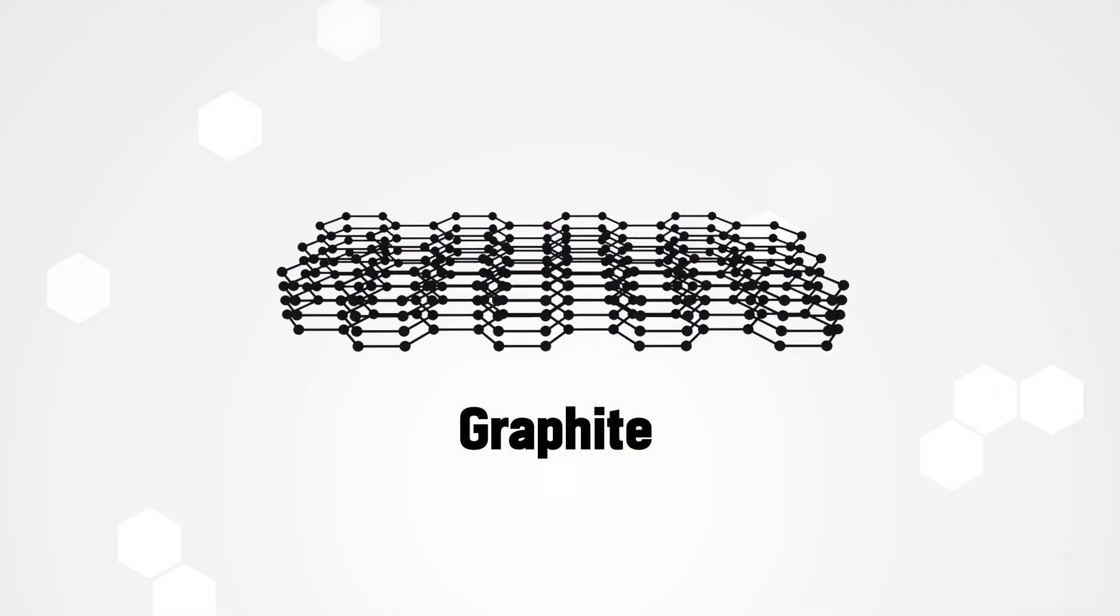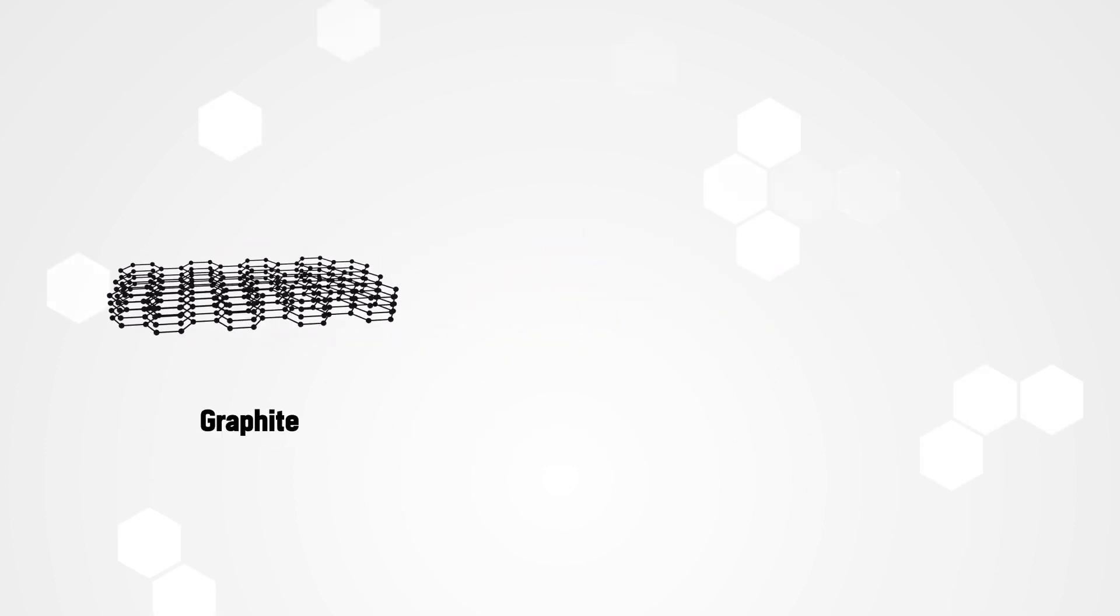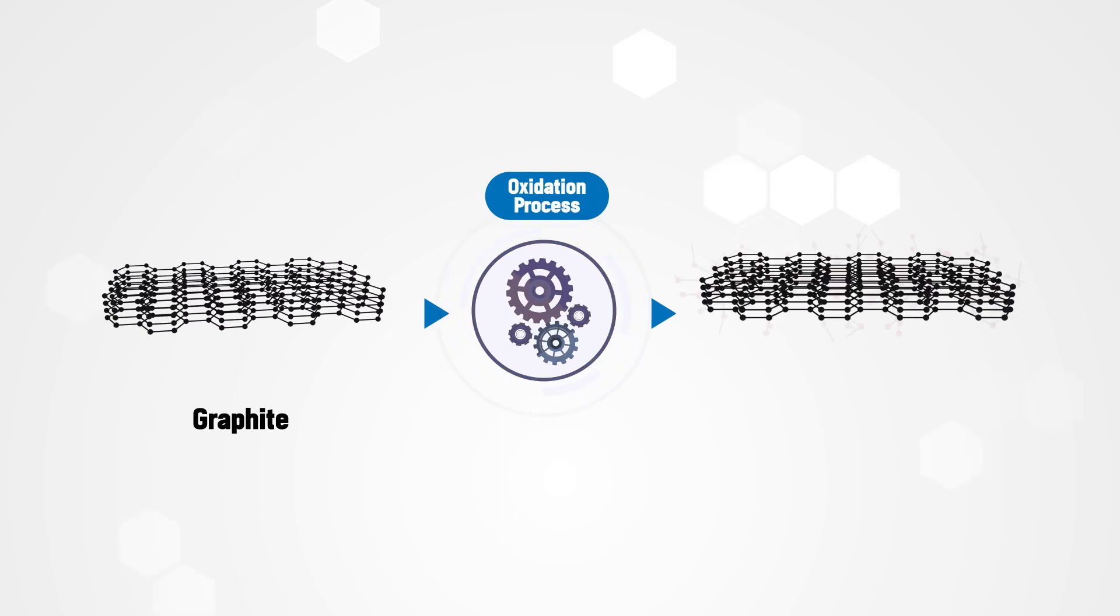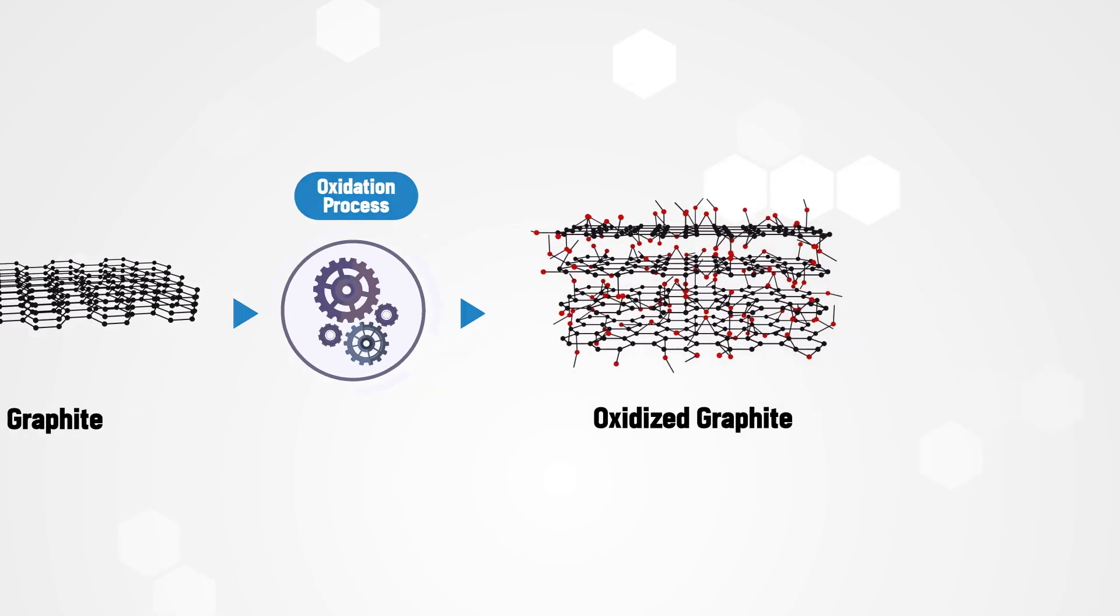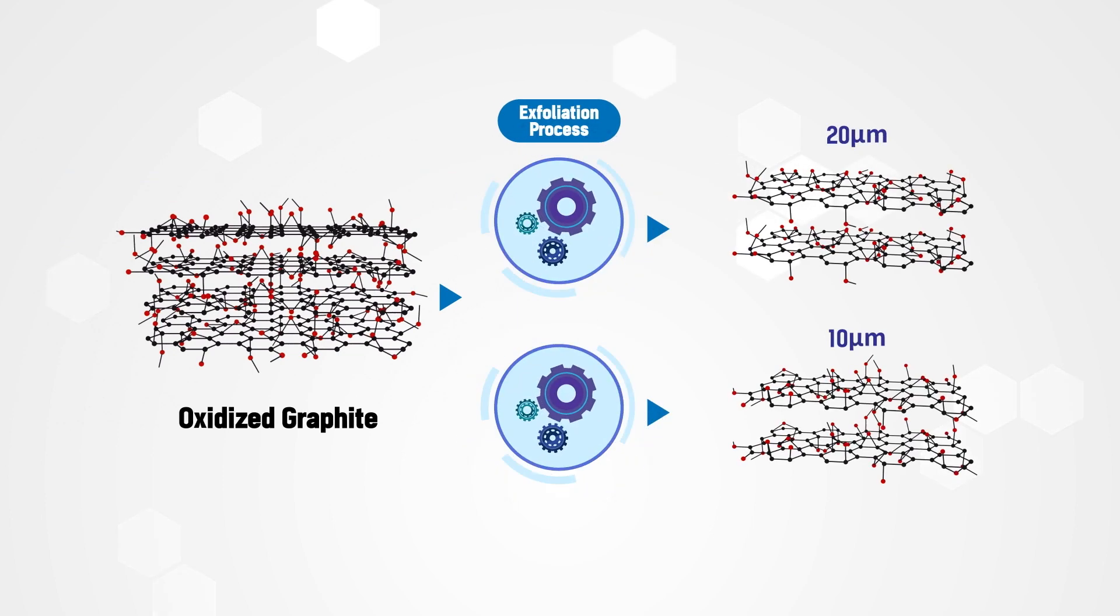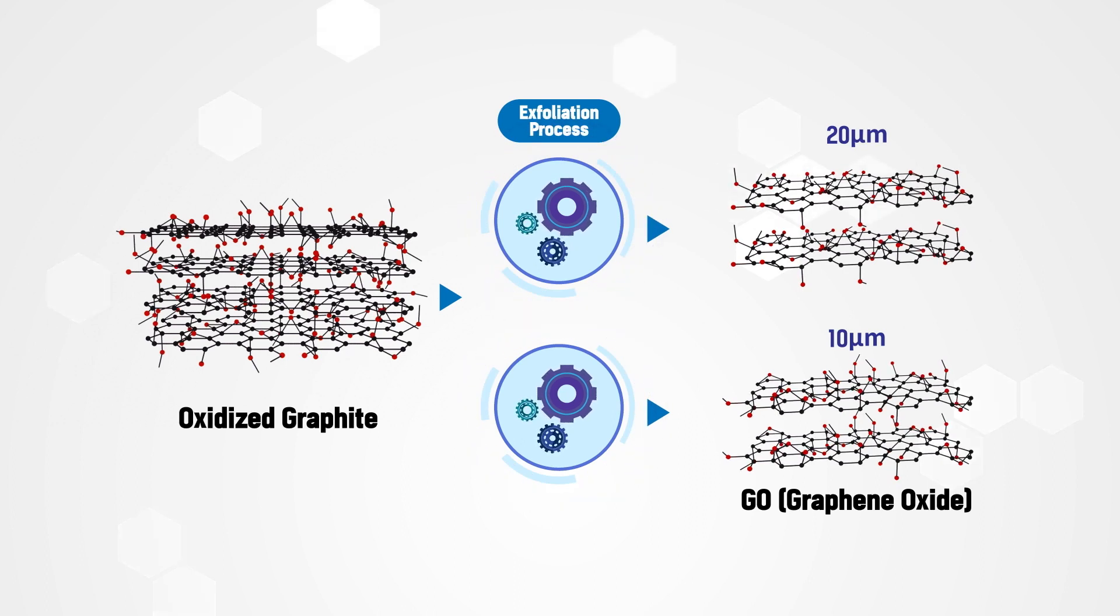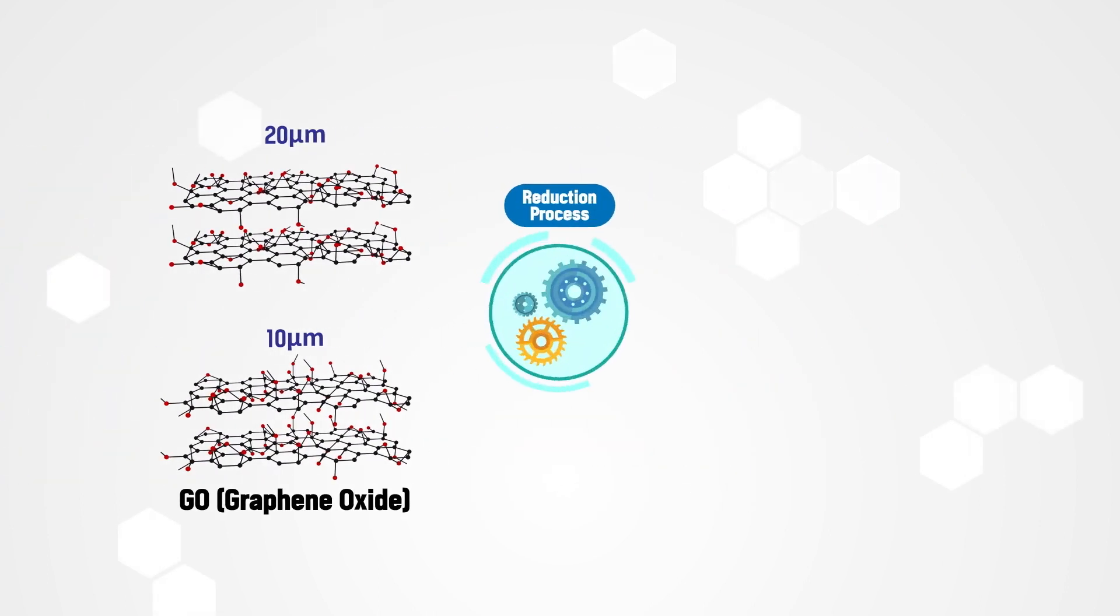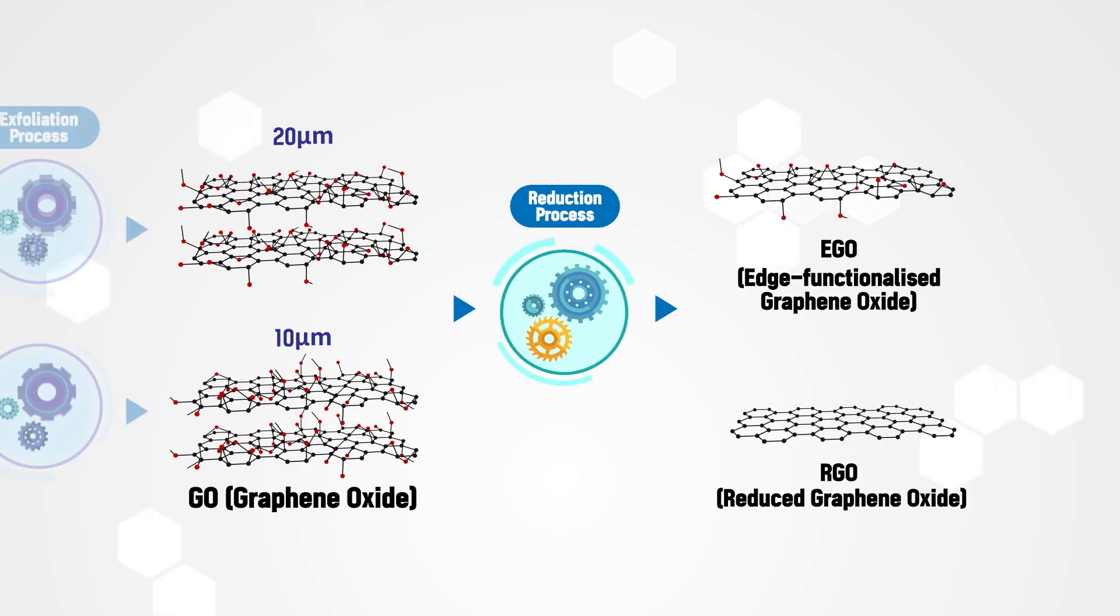JMC can manufacture graphene in large quantities through an oxidation process. First, graphite in the solid state is oxidized to produce graphite oxide. Next, several peeling methods make graphene oxide. The desired particle size can be made according to the chosen peeling method. Finally, the reduced graphene oxide is manufactured through a reduction process.